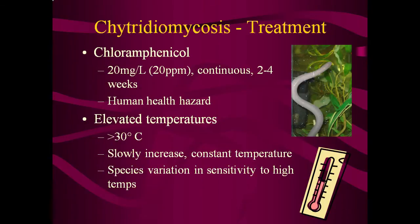Elevated, constant, prolonged environmental temperature greater than 30 degrees Celsius may be effective in treating chytrid. This method has shown promise in both terrestrial and aquatic species. It is important to slowly increase and then maintain a constant temperature rather than subjecting the animals to rapid temperature changes. Note that many amphibians may not be tolerant of these temperatures and this treatment should be used cautiously in novel species.